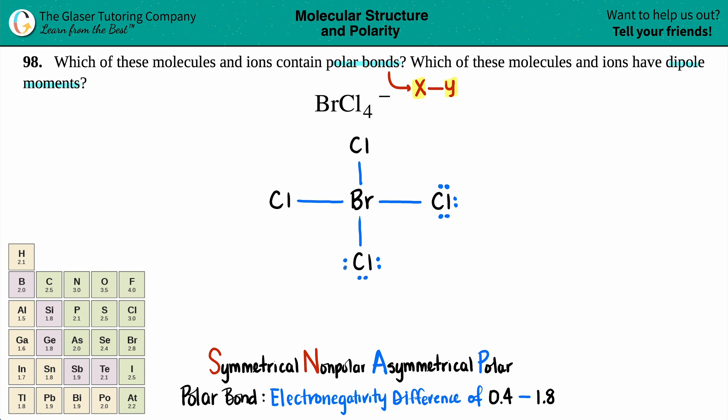Bromine has seven valence electrons. It's using one, two, three, four of them, so it has three extra valence electrons. But this minus means you gained one, so you actually have four valence electrons left: two lone pairs. It's an ion, so I have to bracket this and throw the negative in the upper right-hand corner.